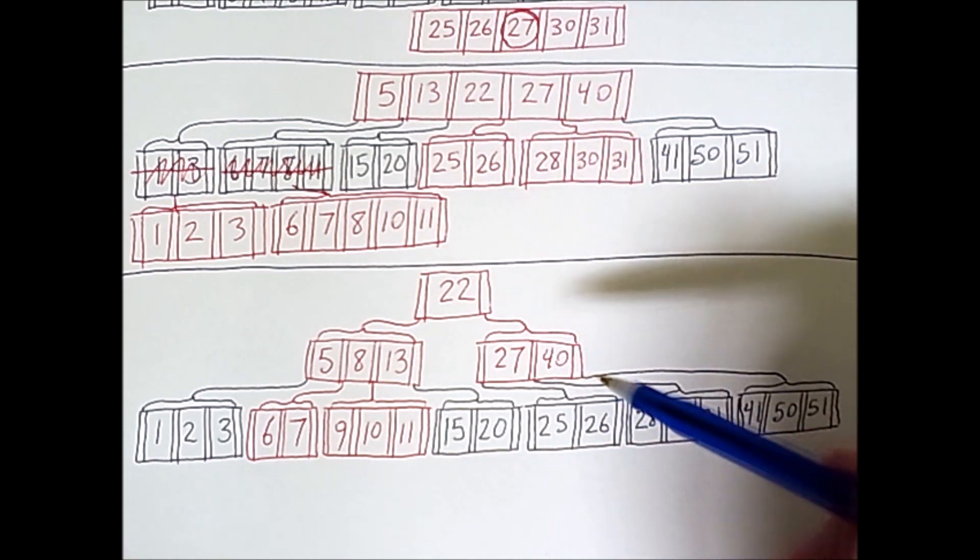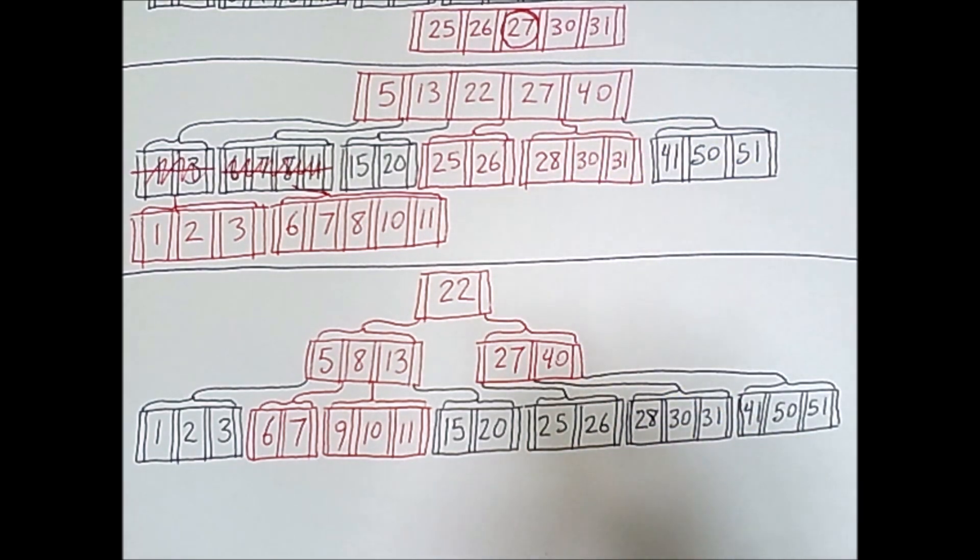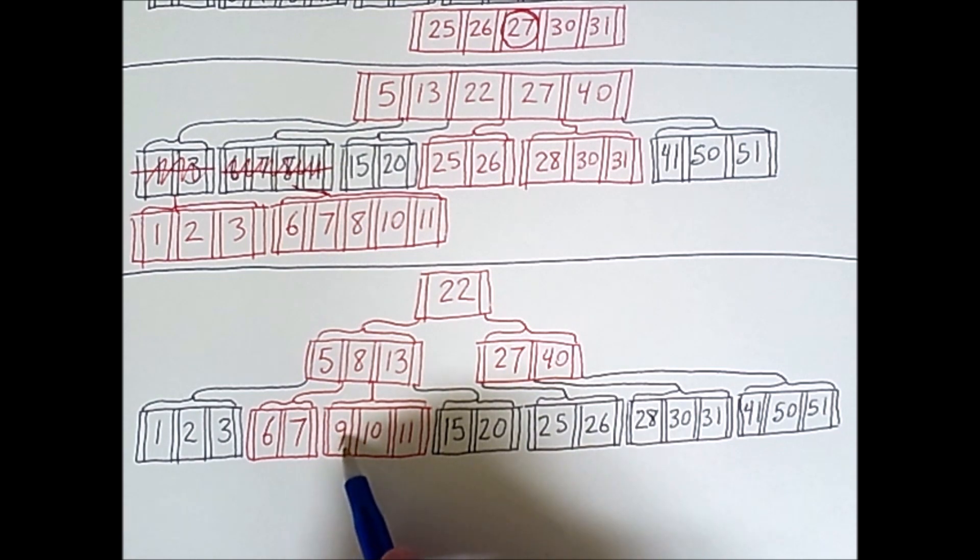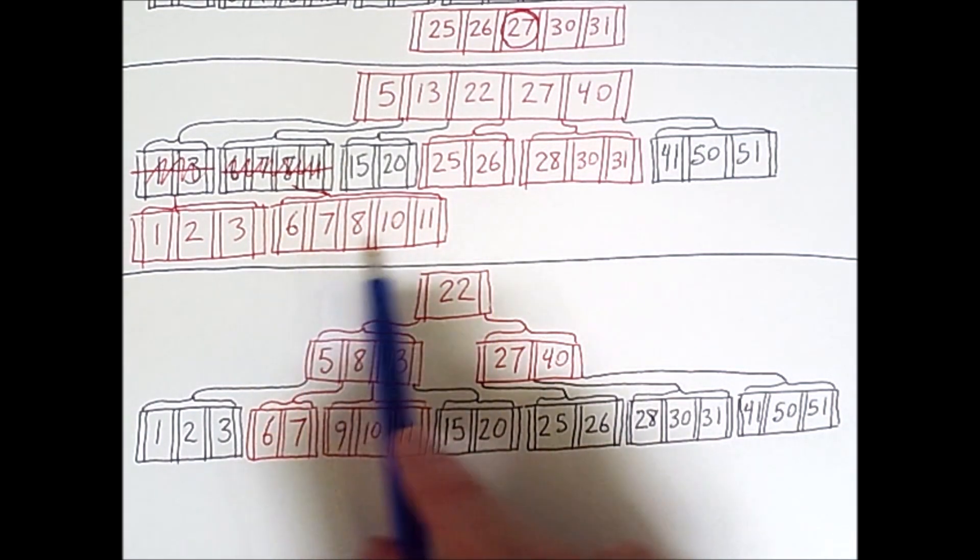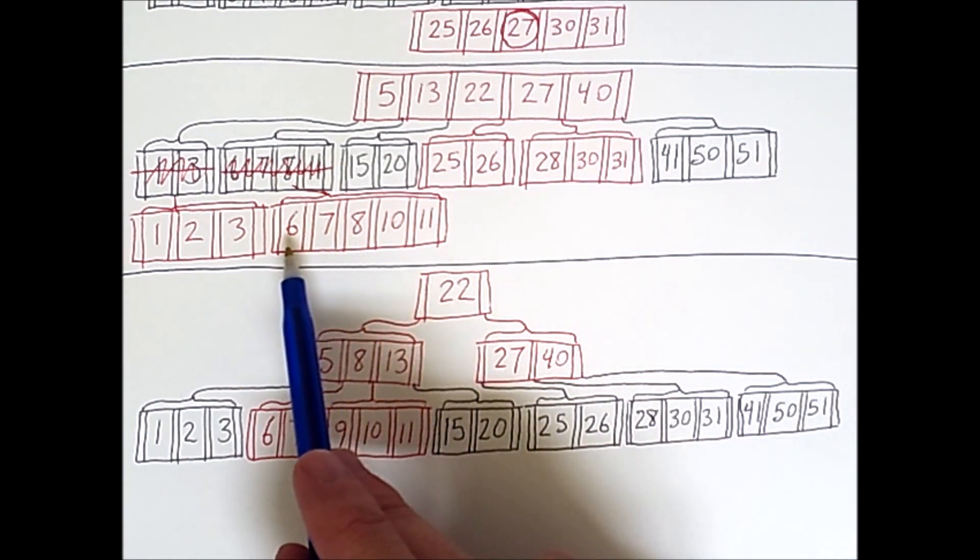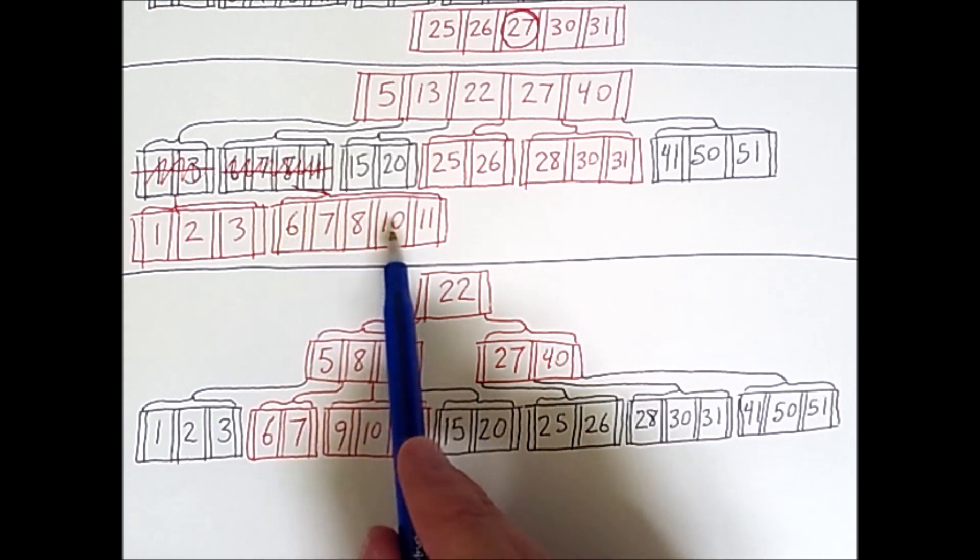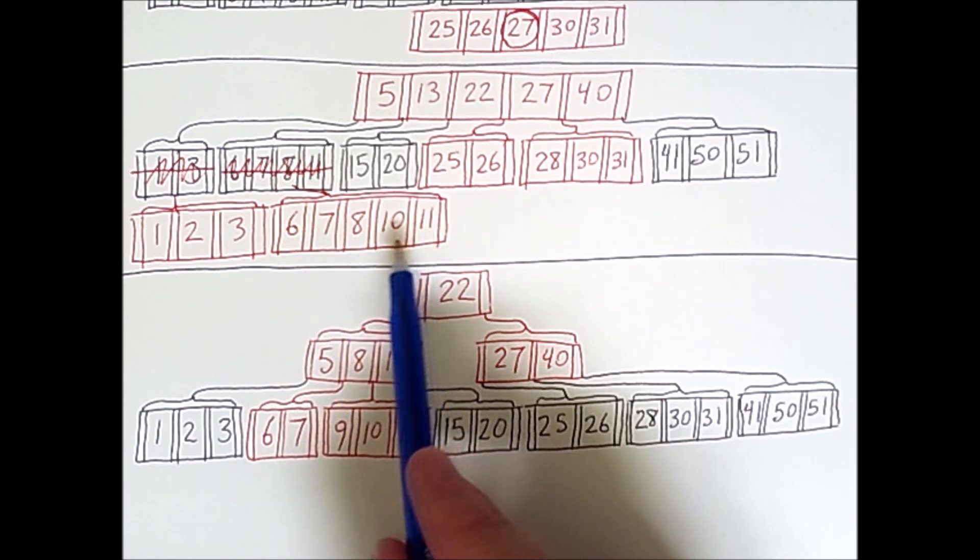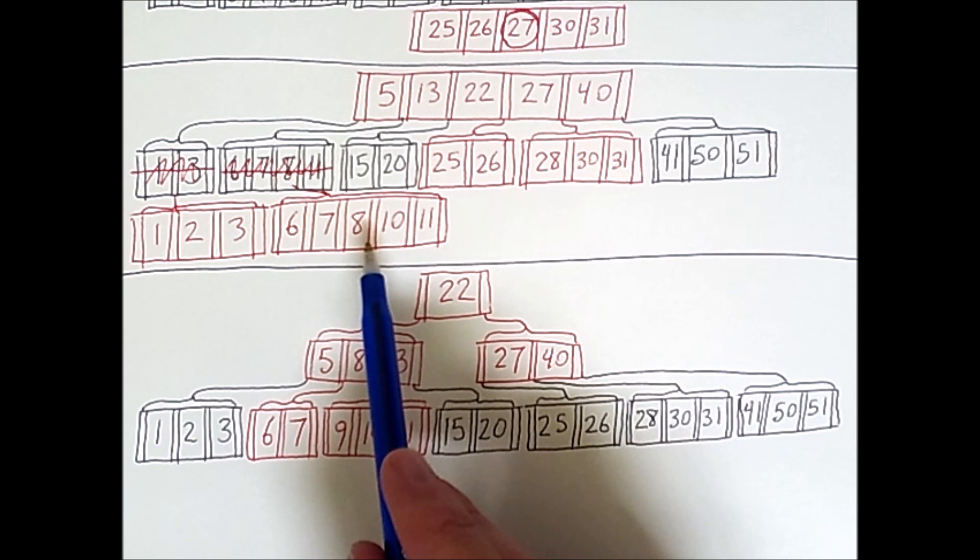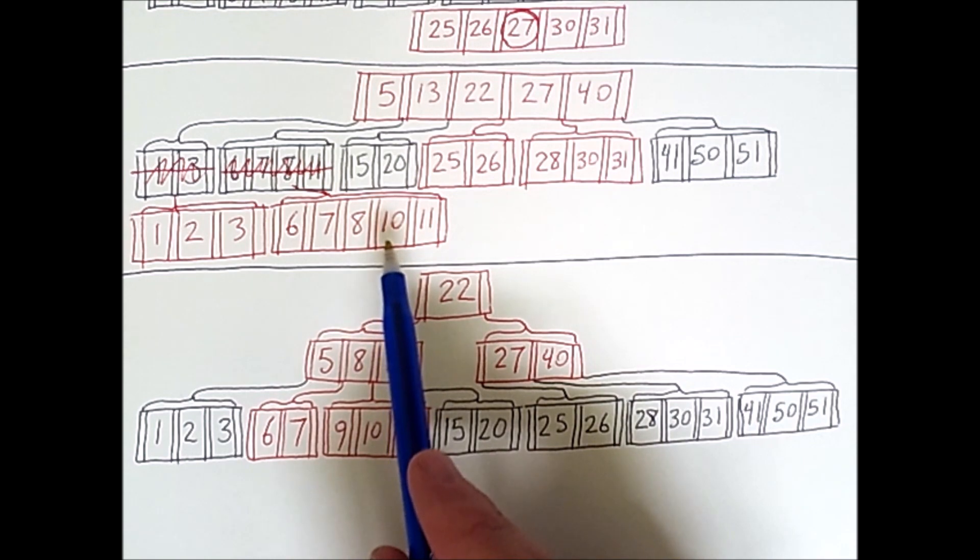So what happened between here and here? Well, remember that the value we inserted was 9. So looking at this previous tree, we had a node with 6, 7, 8, 10, and 11. So adding 9 to this would have resulted in too many keys for a node given that the min degree is 3, and hence the max is 2d minus 1 keys.